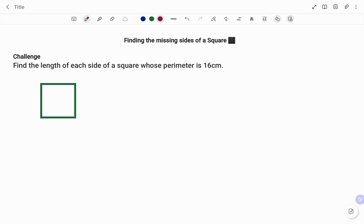Like I said earlier, all the sides of a square are equal. And if the perimeter P equals 16 centimeters, then the side is equal to 16 divided by 4, and that will give us 4 centimeters.